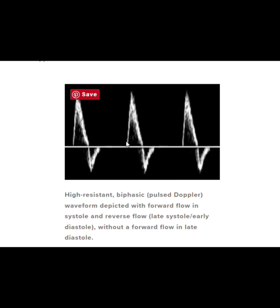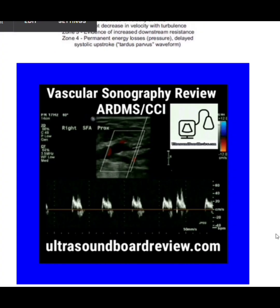Here we have an example of a biphasic arterial waveform. This is where you'll have anterograde flow in systole and then reversal flow in late to early diastole, but no blood flow during diastole. You'll see flow above the baseline and then below the baseline — two distinct points. Biphasic waveforms indicate either normal flow or that the patient has good collateral blood flow.